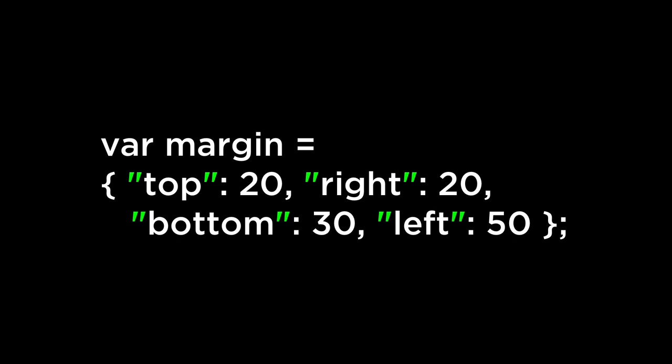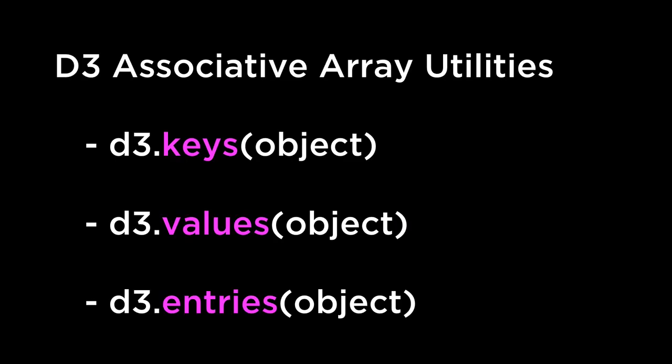D3 associative array operators. Margin is a JSON object because of the double quotes around the keys. That said, it is still a JavaScript object literal, which also means that it is an associative array. Much like D3 provides additional methods to the JavaScript array methods, D3 also provides additional methods to the JavaScript associative array methods. These methods are D3.keys, D3.values, and D3.entries.